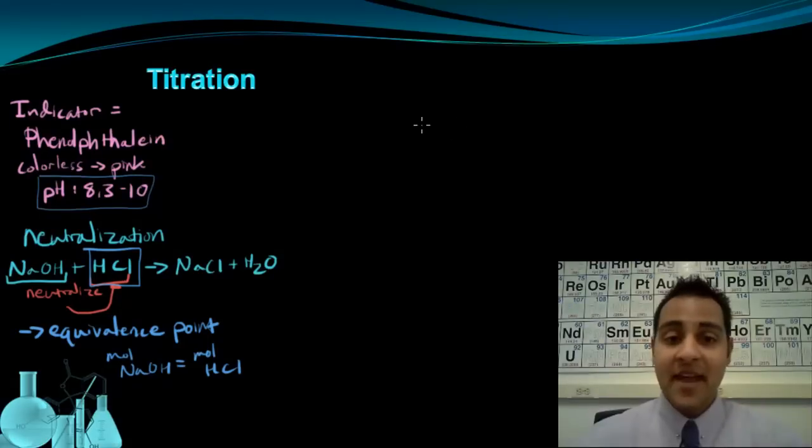Now titrations can give you very accurate results. But indicators are limited in the accuracy because you're using the end point to guess at the equivalence point. If we instead use a device called a pH probe, we can get even better results. So let's take a look at some data collected using a pH probe.